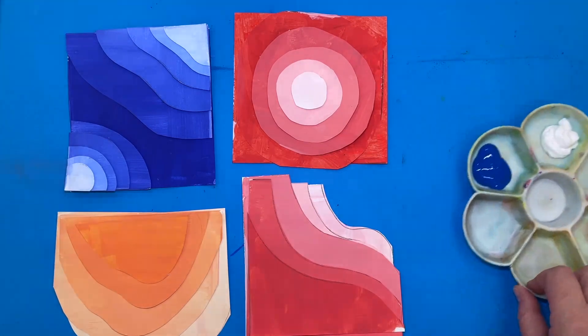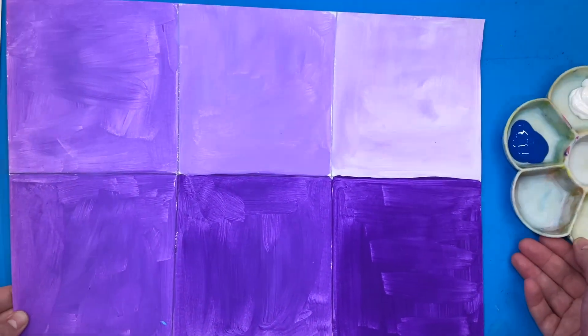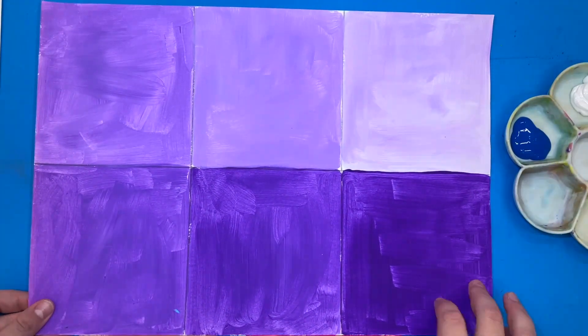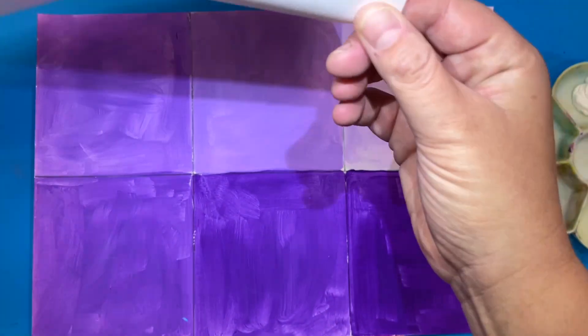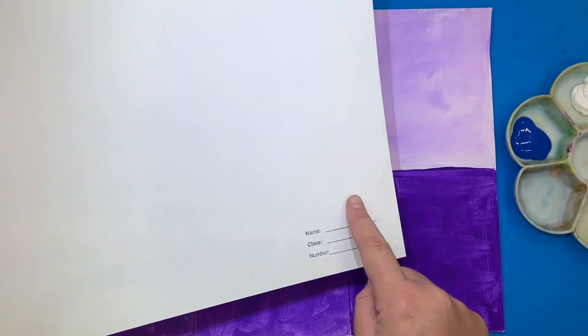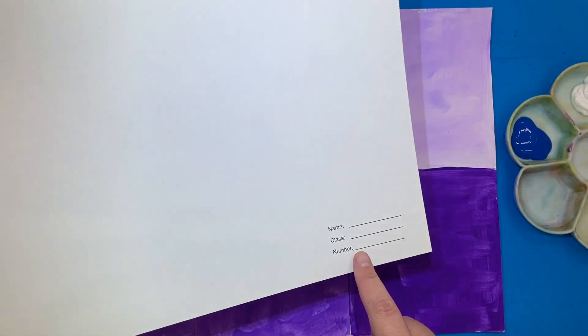Today our goal is that we are going to be creating six different tints of a color. You will get a piece of paper that has six sections on it and a place for you to write your name, class, and number on the back. This is the first thing that you need to do. Please don't forget this before you begin.